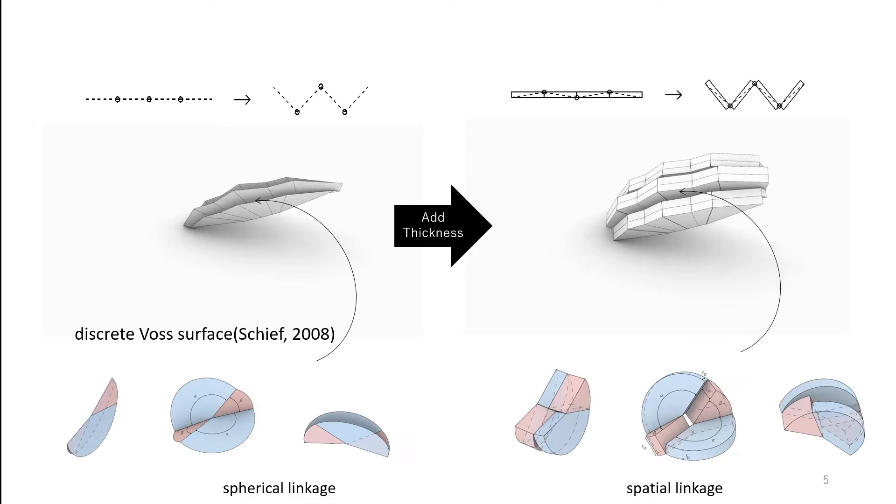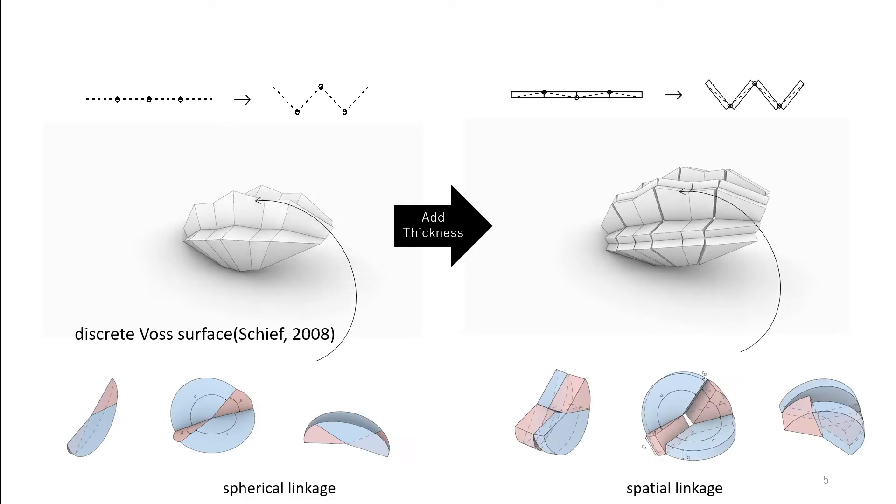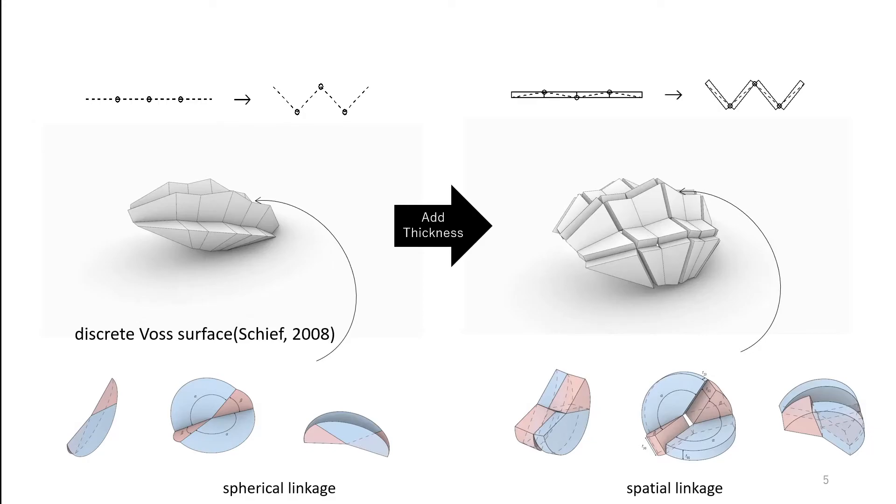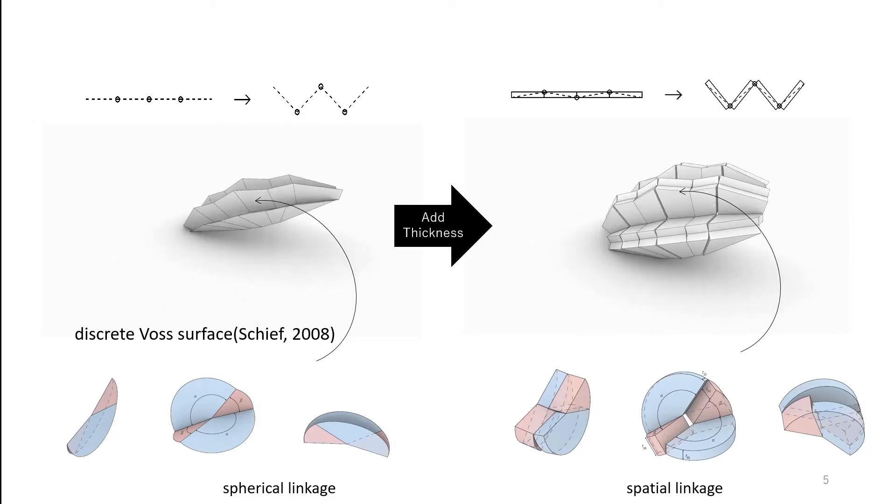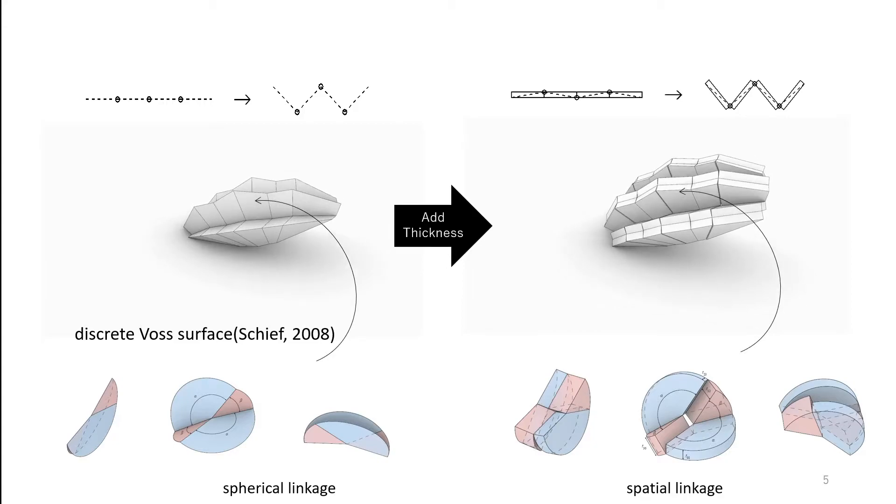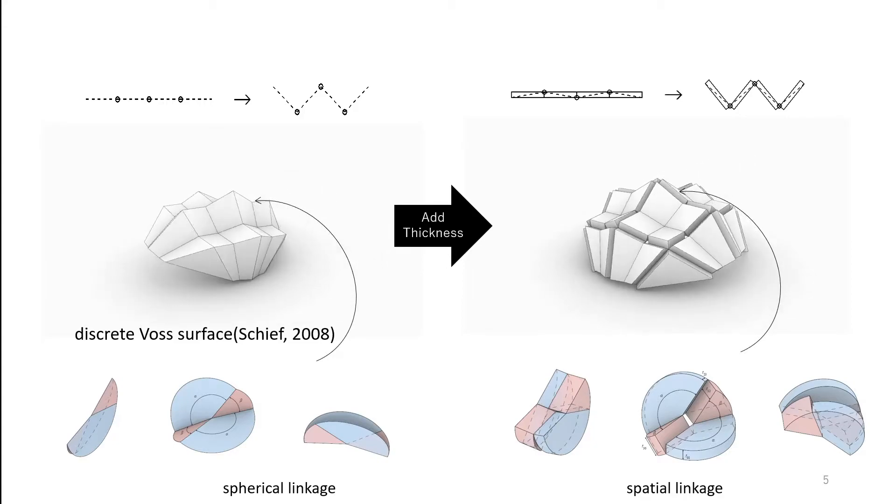Shifted axis changes the kinematics of rigid origami from a spherical linkage to a spatial linkage, so the method applies to limited types of vertices, satisfying conditions between thickness and the sector angles.